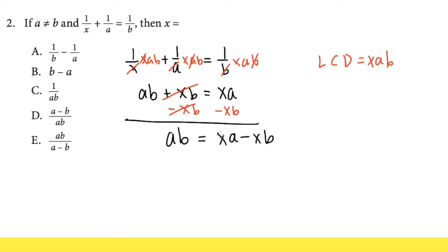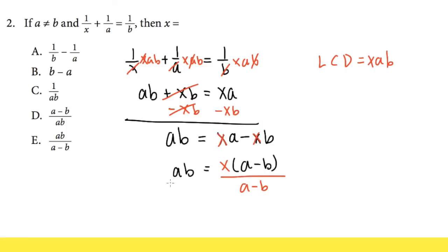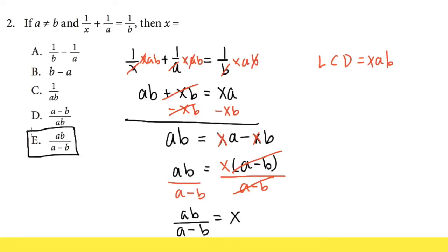Now, focusing on the right-hand side, both terms have x — let me color this in red. We can factor out that x, and we will have x times (a minus b). On the left-hand side it stays the same, so we have ab equals x times (a minus b). At the very end, we divide both sides by (a minus b) — the (a minus b) cancels out — and we end up with x by itself, equal to a times b over a minus b. So x equals ab over (a minus b), and that's choice E for the answer.